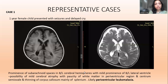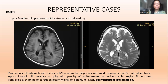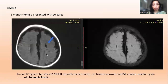Case 1: A one-year-old female child presenting with seizures and delayed cry. On T1-weighted and T2-weighted axial MRI, there is prominence of the subarachnoid spaces in the bilateral cerebral hemispheres with mild prominence of the bilateral lateral ventricles, suggesting mild cerebral atrophy, with paucity of white matter in the periventricular region and centrum semiovale, and thinning of the corpus callosum mainly at the splenium — likely periventricular leukomalacia.